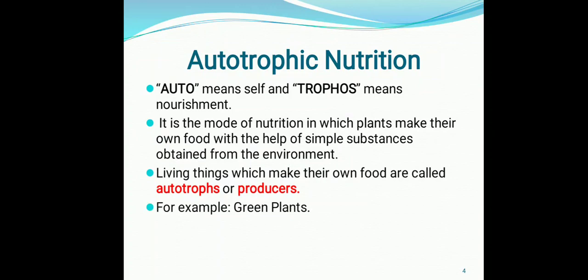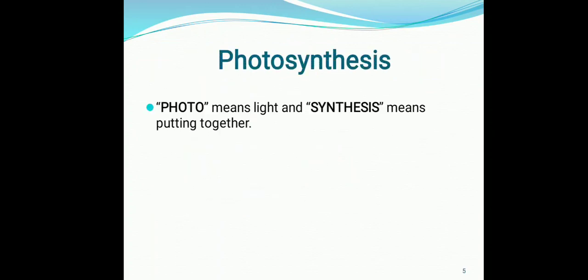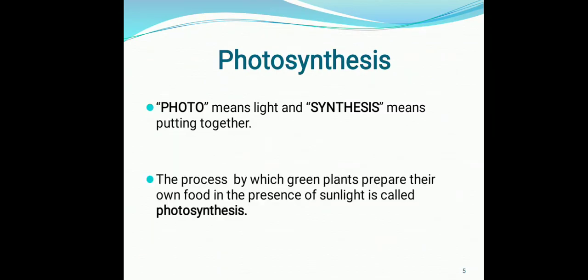You have already studied in your previous class about the process by which plants make their own food. This process is known as photosynthesis. Photo means light and synthesis means putting together. So it is the process by which green plants prepare their own food in the presence of sunlight.